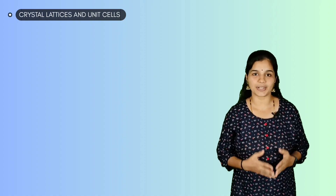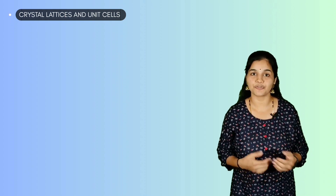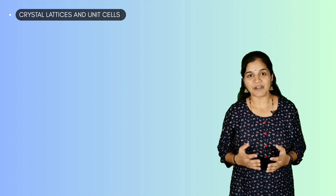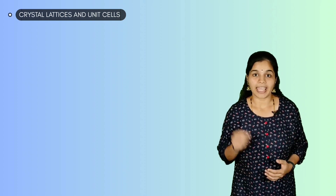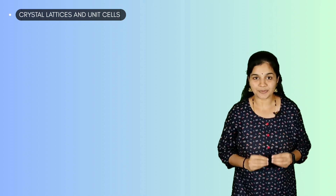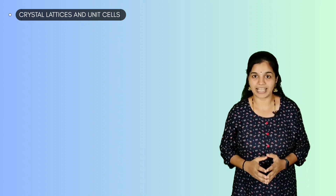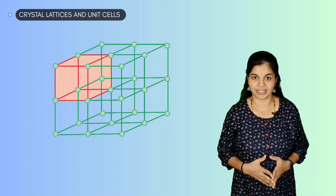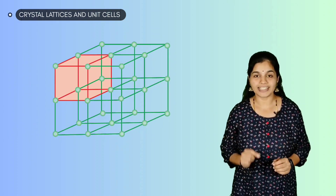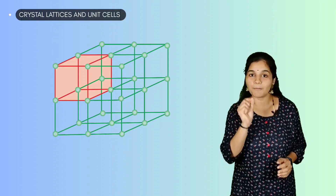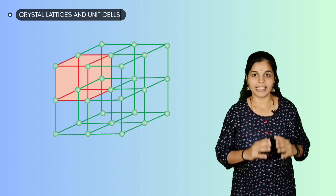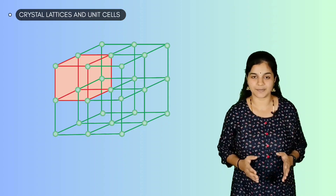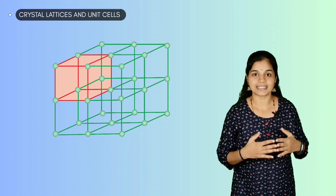Crystalline solids have a regular arrangement of constituent particles, and this pattern repeats itself throughout the crystal structure. A portion of this arrangement of particles in three dimensions can be beautifully represented by a particular diagram. Each particle of the solid is depicted as a point in the figure. This regular three-dimensional arrangement of points in space is called a crystal lattice.